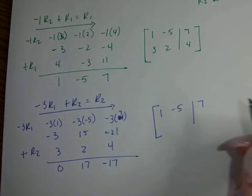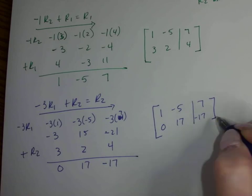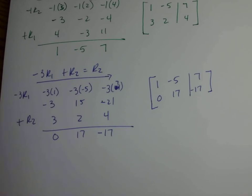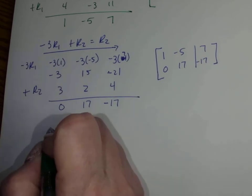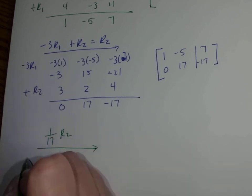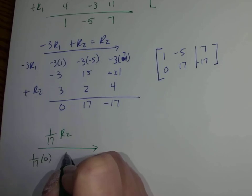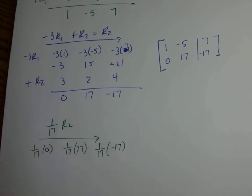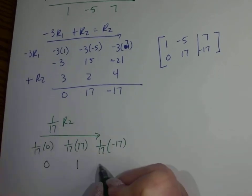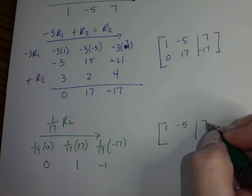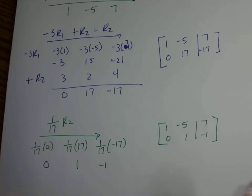Rewriting the matrix: row 1 is 1, negative 5, and 7; row 2 is 0, 17, and negative 17. Next goal is to get the 17 to become a 1. I'll multiply by 1/17 times row 2 to get the new row 2. That gives 1/17 times 0, 1/17 times 17, and 1/17 times negative 17 — resulting in 0, 1, and negative 1.